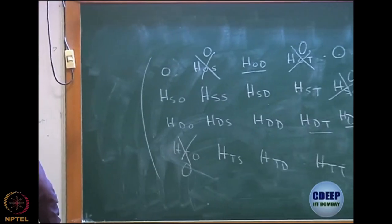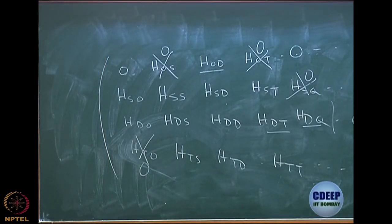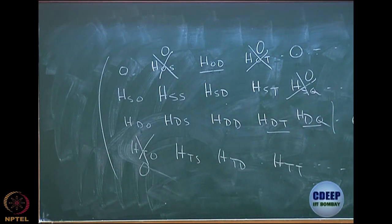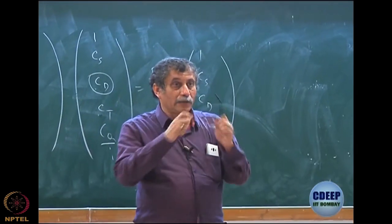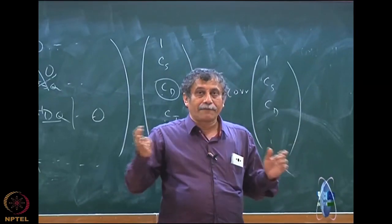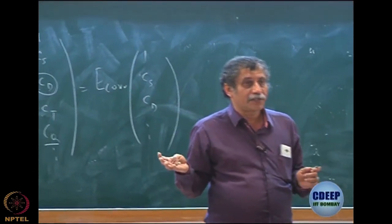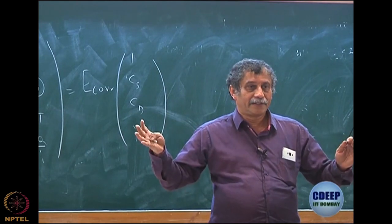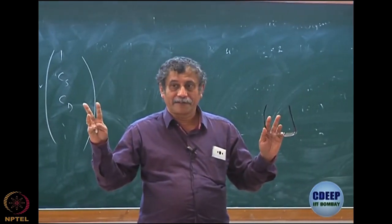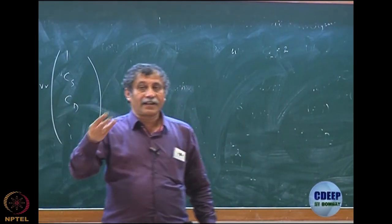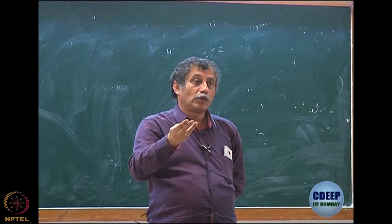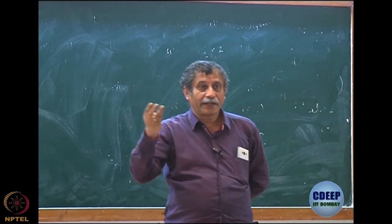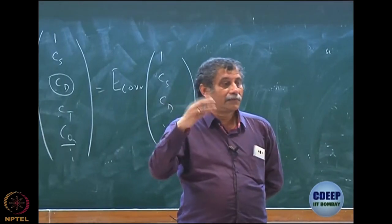Let us look at ionization potential calculations. The ionization potential is calculated as the energy difference between the N-electron and N-minus-1-electron systems. There are several approaches: doing Hartree-Fock for both N and N−1 and subtracting (delta-SCF), or using Koopman's approximation where we just take the orbital energies of the N-electron system. These two give different results; Koopman's often works well due to cancellation between relaxation and correlation.